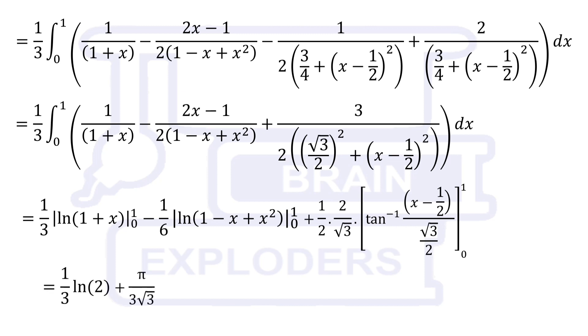Finally, we get the required sum equals 1 third of natural log 2 plus pi over 3 root 3. This was our solution.